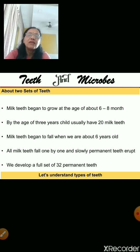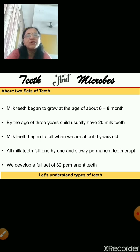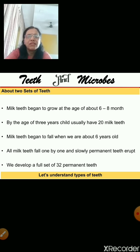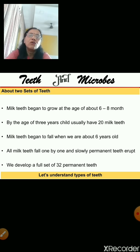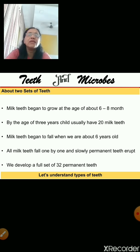After that, the milk teeth begin to fall one by one. You must also be observing that your teeth are falling one by one. When you become about 6 years of age, the milk teeth begin to fall one by one. And in their place, you will get a new set of teeth — that will be a permanent set of teeth. Permanent means the teeth which will last your whole life, and there will be 32 in number.